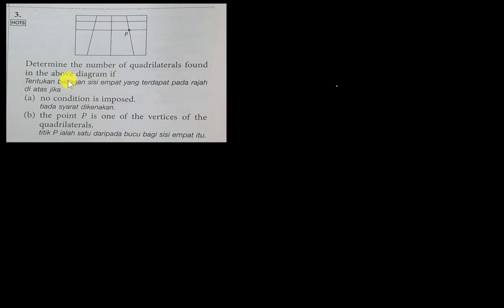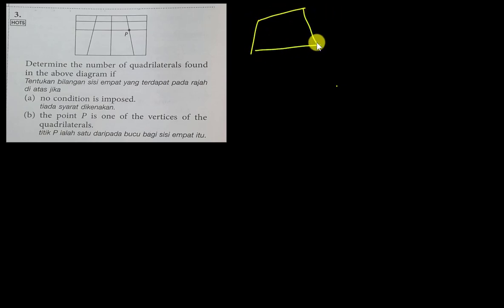First, you have to understand what a quadrilateral is. It's not a rectangle — it means the shape is formed by four random lines, like this. You can see this shape is formed by four random lines, so we call it a quadrilateral.